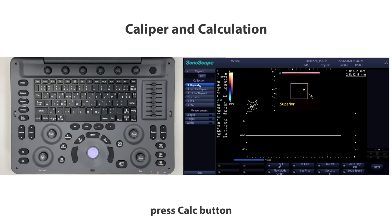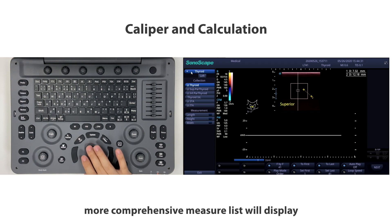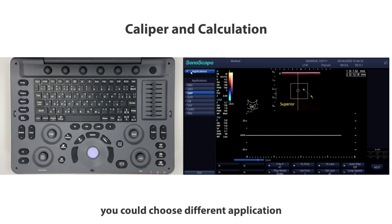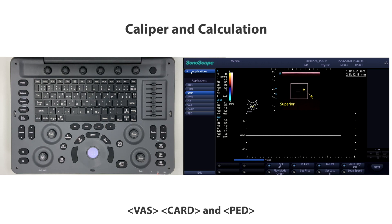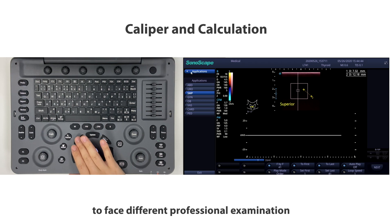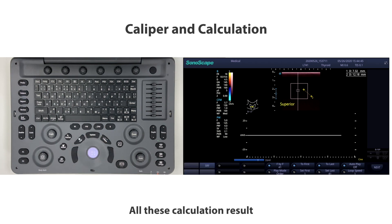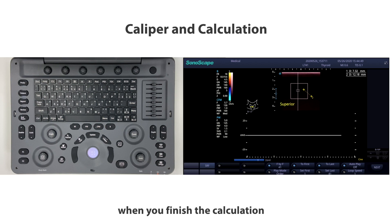If you want to go further with measurements, press the Calc button for a more comprehensive measurement list. You can choose different applications — we cover abdominal, urology, small parts, gynecology, obstetrics, vascular, cardiac, and pediatric to address different professional examinations. All calculation results will go to the report automatically when you finish.